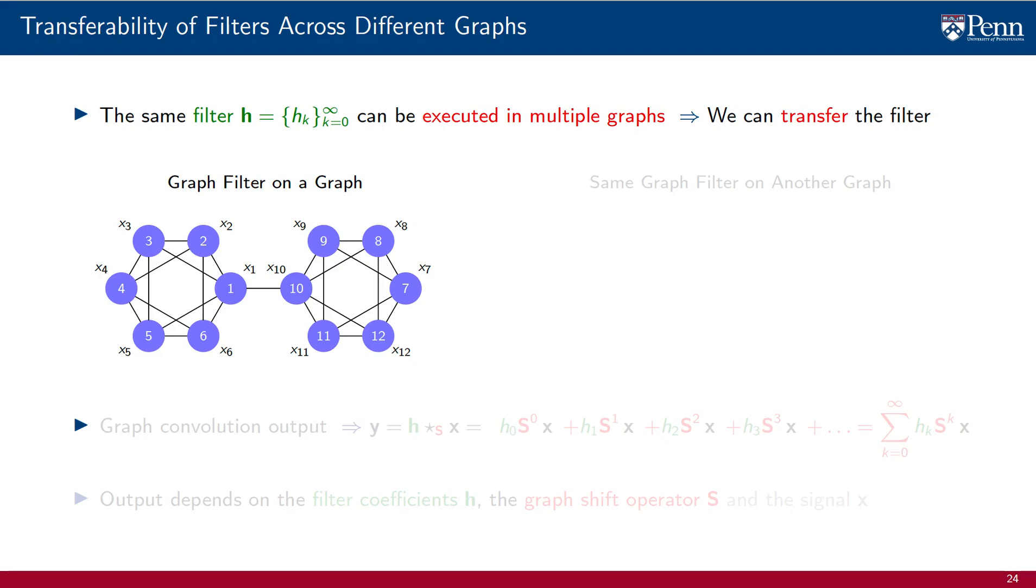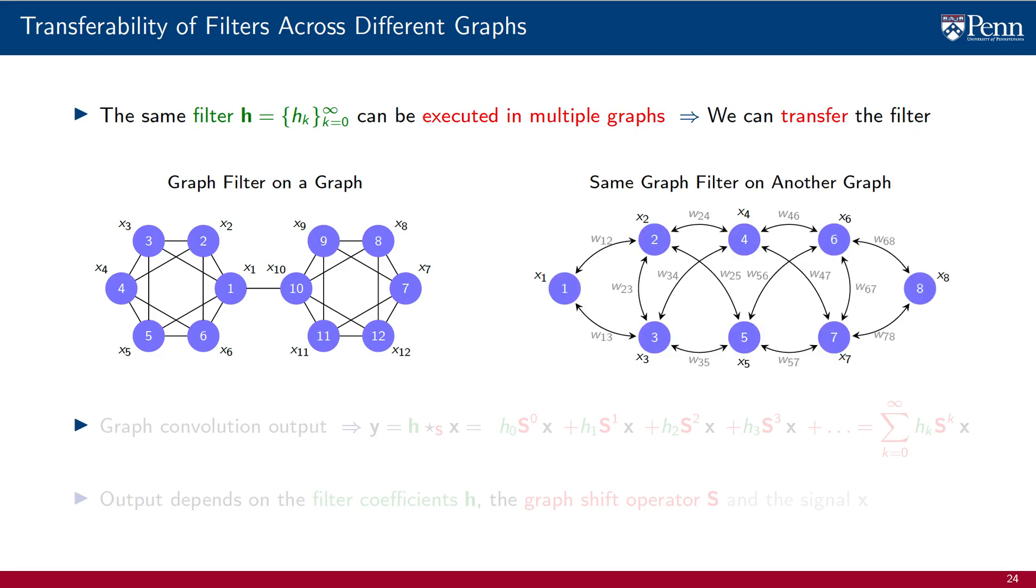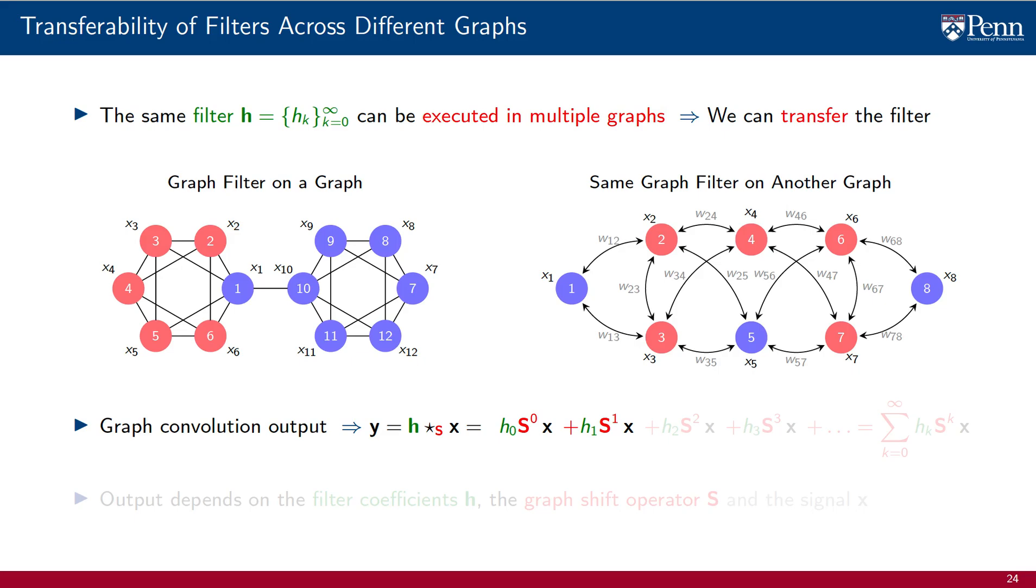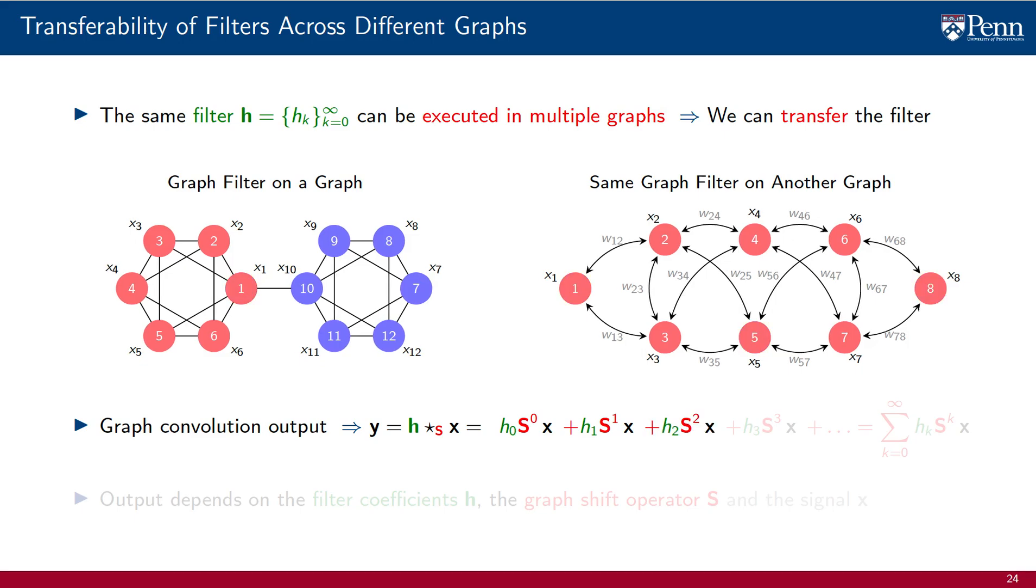To illustrate this point, consider a signal supported on a graph, the same one we considered a minute ago, but consider also a different signal supported on a different graph. To write the convolutions outputs, we proceed as before. We start with the signal scaled by coefficient h_0. This is the same operation on both graphs. We then add the diffusion S times x modulated by coefficient h_1. The resulting operations are now different in the different graphs because the graph neighborhoods are different. This is highlighted for node 4 in both graphs. The same is true of element 2.